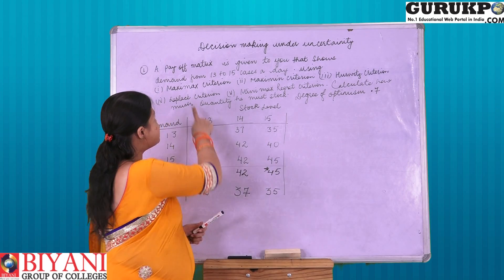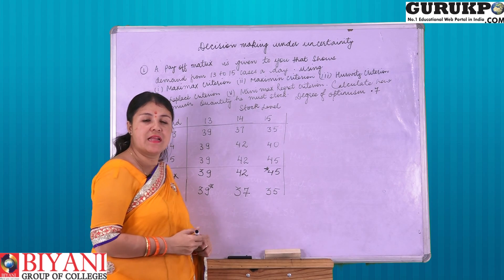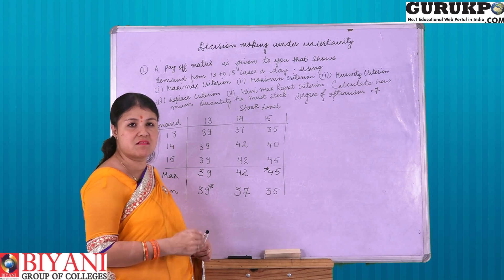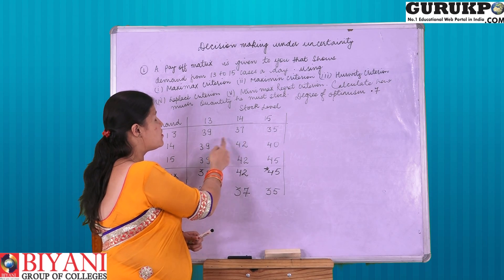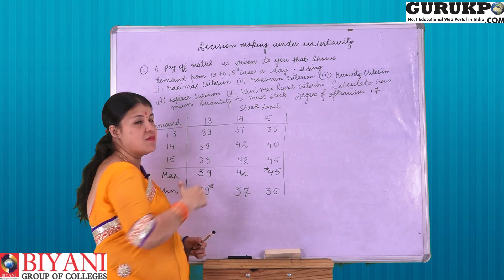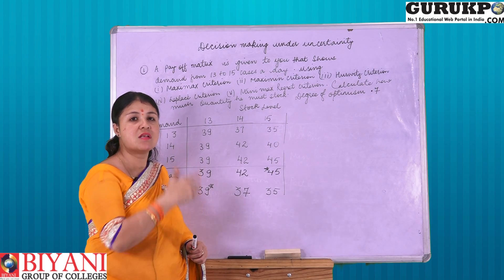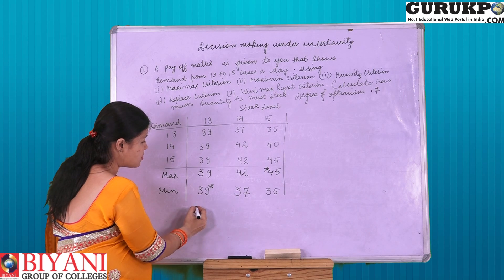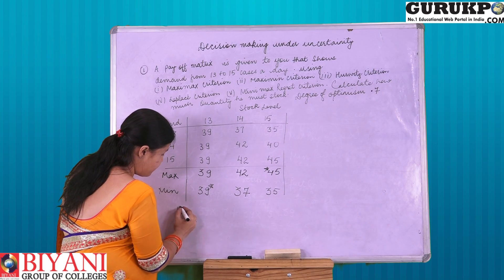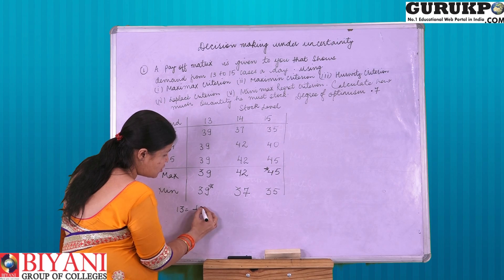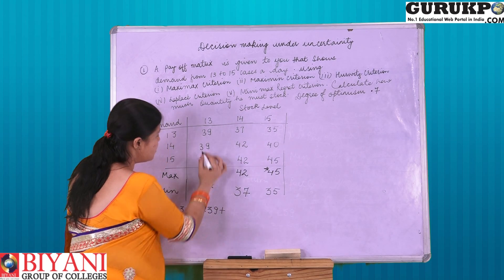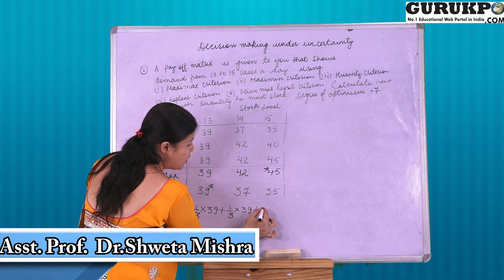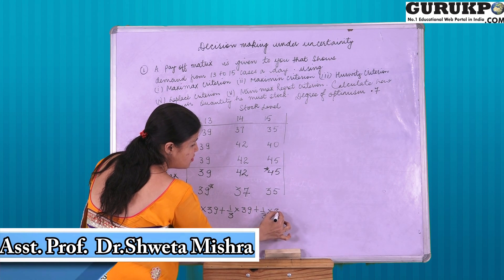Moving on to the next, Laplace criteria. In Laplace criteria, we assign equal weights to the number of entries given to us. Here, the stock levels are 3, that is 13, 14, and 15, and the equal weight is 1/3. To calculate Laplace criteria for 13 stock level: 1/3 × 39 + 1/3 × 39 + 1/3 × 39.